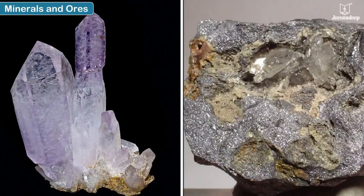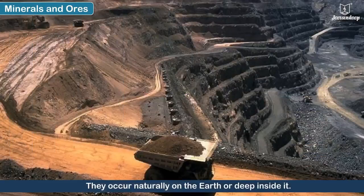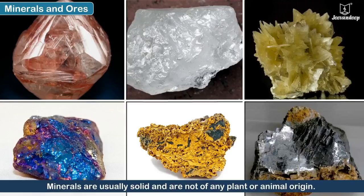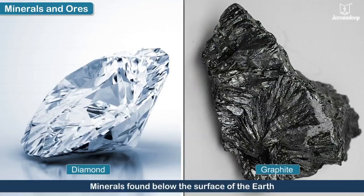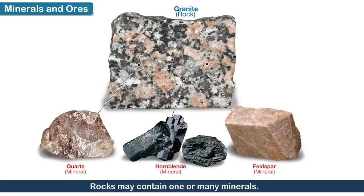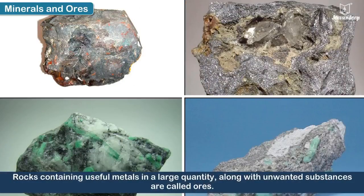Rocks are made of substances called minerals. Minerals occur naturally on the Earth or deep inside it. They are usually solid and are not of any plant or animal origin. Some minerals are extracted from the sea salts present in seawater. Diamond and graphite are some minerals found below the surface of the Earth. Rocks may contain one or many minerals. Metals such as iron, copper, and aluminium occur as part of the rock. Rocks containing useful metals in large quantities along with unwanted substances are called ores.